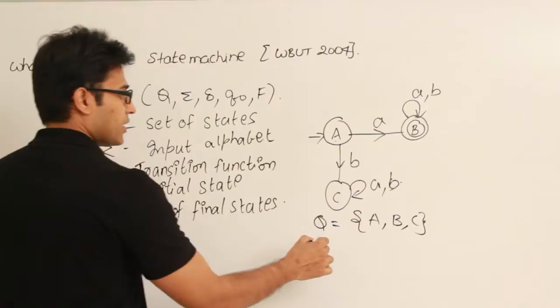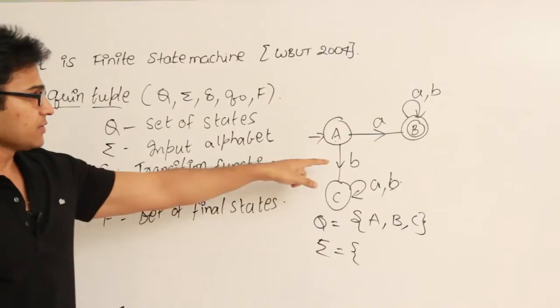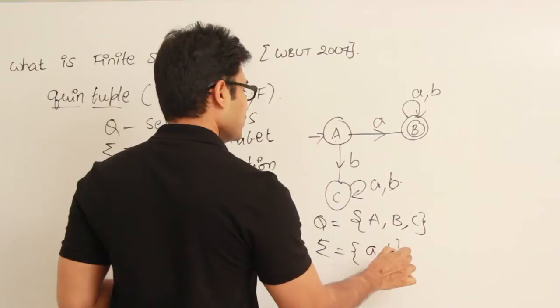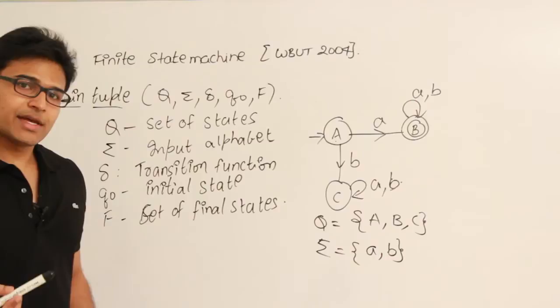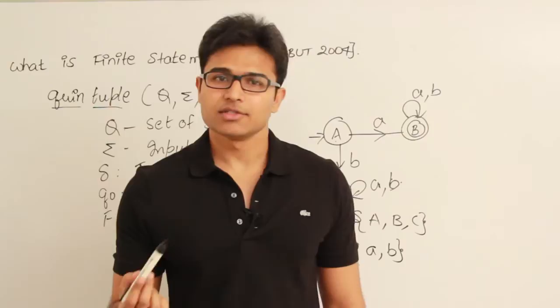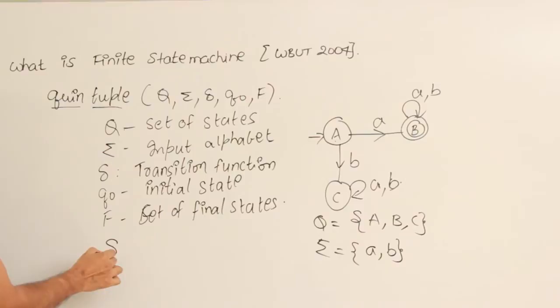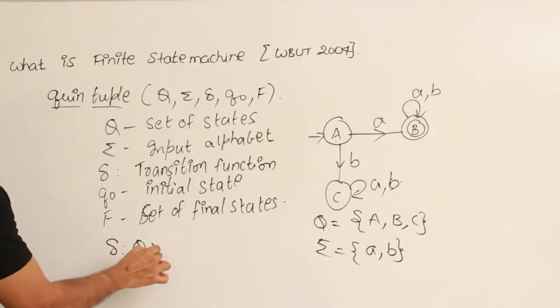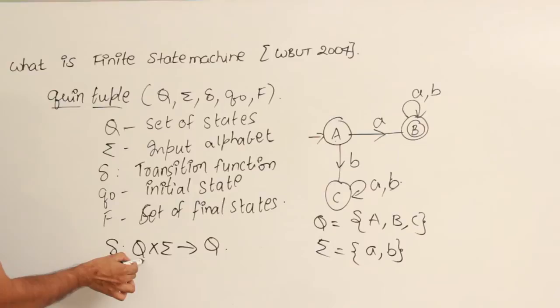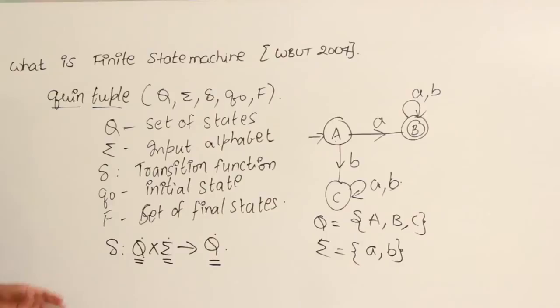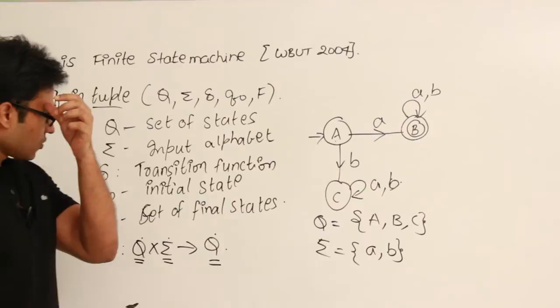Sigma is the input alphabet — whatever you see on the transitions. Here the input alphabet is {a, b}. Delta is the transition function: given a state and seeing a symbol, where does it go? You can write it as: delta is a function from Q cross sigma to Q.